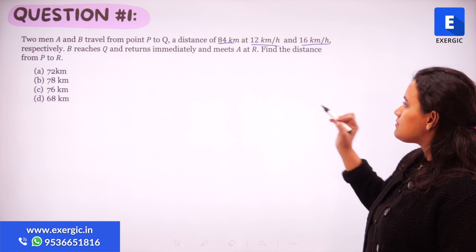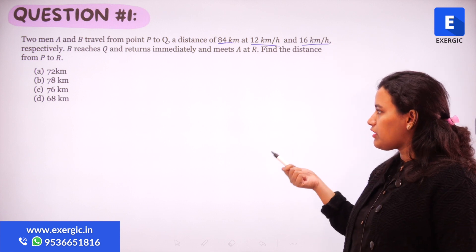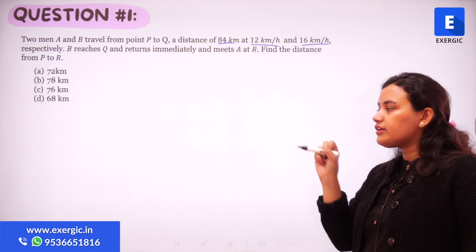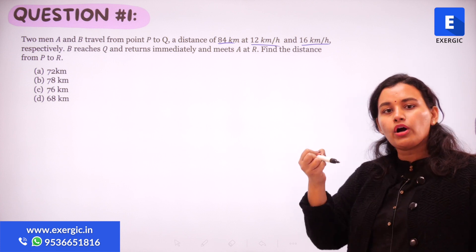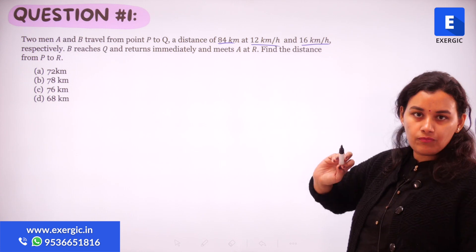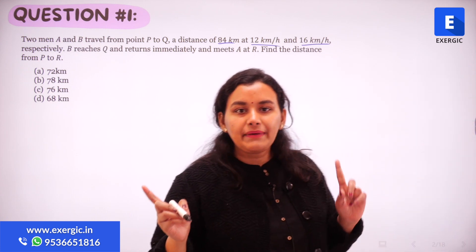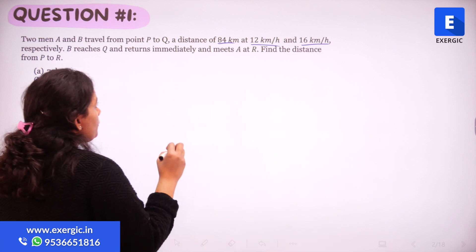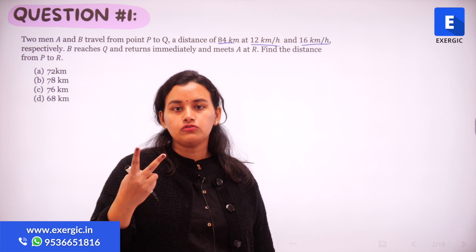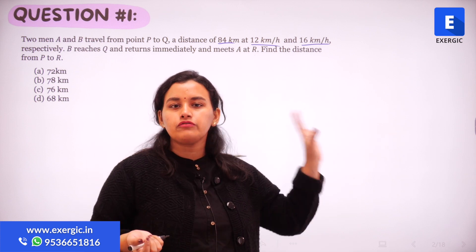Since B has a faster speed, B will reach the destination sooner and after reaching Q, he returns immediately and starts walking back towards A, meeting A at point R. We want to find the distance between P and R. Whenever you see a question of time, speed and distance, try to get a pictorial representation of what's happening.